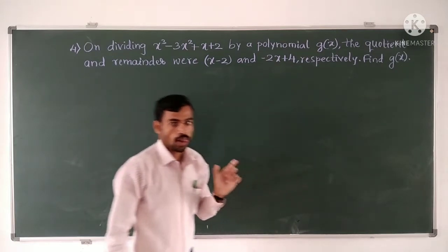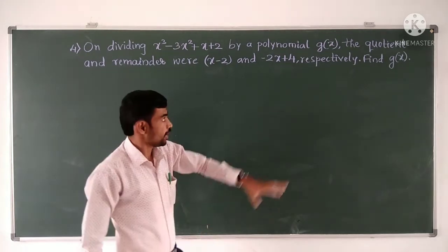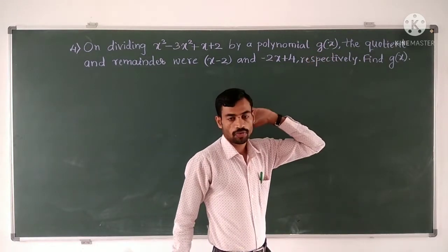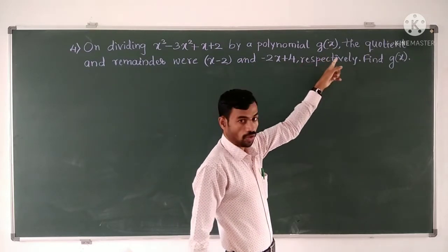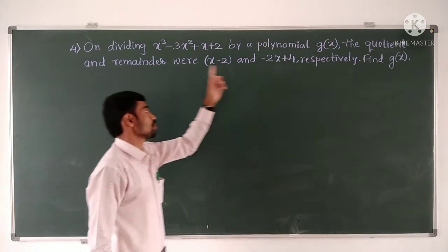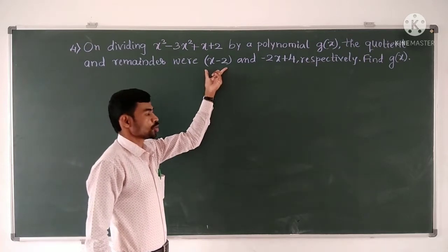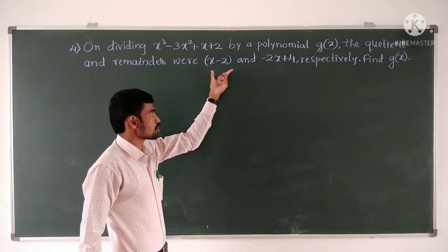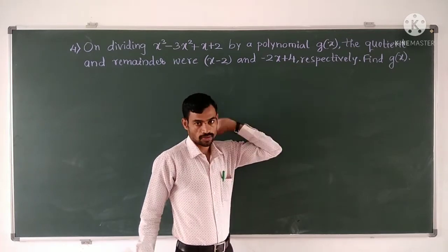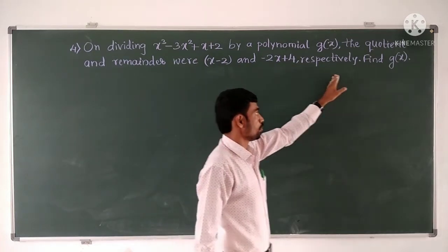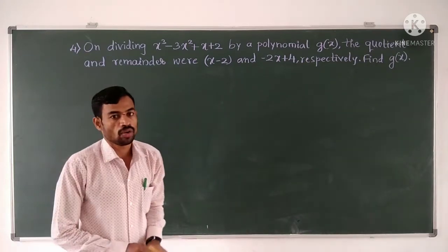one polynomial is given, which is divided by G of X. When it is divided by G of X, we obtain the quotient and remainder polynomials. The quotient is X minus 2 and the remainder is minus X plus 4. Then what we have to find is G of X.